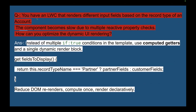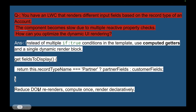You have an LWC that renders different input fields based on the record type of an Account, but the component is slow due to multiple reactive property checks. To optimize dynamic UI rendering: instead of multiple if/true conditions in the template, use computed getters and a single dynamic render block. For example, a getter like getFieldsToDisplay() returns partnerFields if recordType equals 'Partner', otherwise customerFields. This reduces if-else conditions in the template.